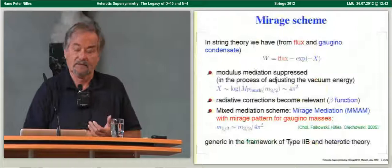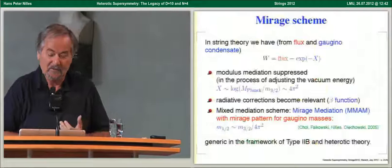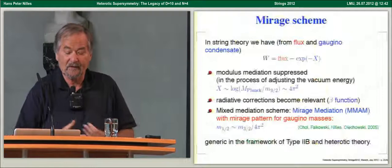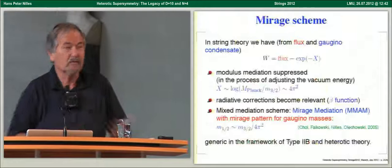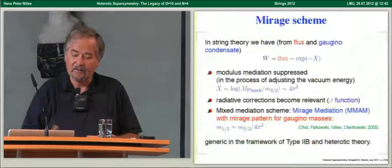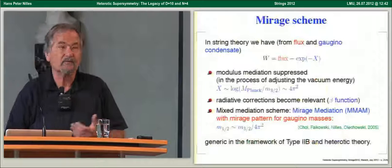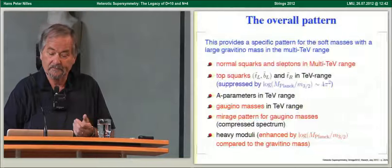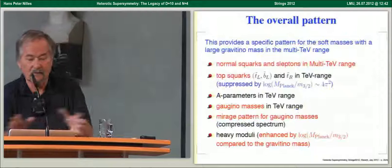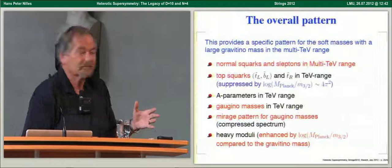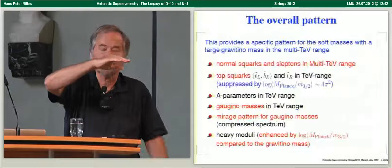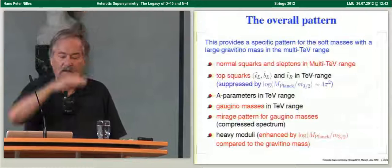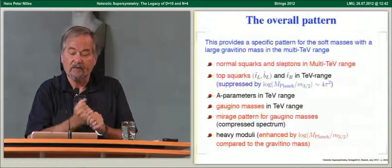The result is a mirage pattern: gaugino masses are suppressed compared to the gravitino mass and show a compressed spectrum. This is generic — first found in Type II flux compactifications as set up by KKLT, and it also occurs in the heterotic theory. The overall pattern gives a gravitino mass in the multi-TeV range, needed so that the gluino mass is reasonable. Normal squarks and sleptons are in the multi-TeV range, as expected for scalars. But here is the catch.